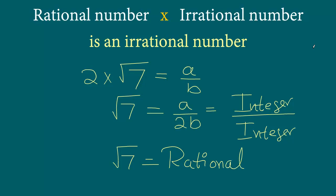Now we know for a fact that square root 7 is not a rational number. In a question such as this, our goal is not to prove how square root 7 is irrational — if that were the question we would use the method we used to prove square root 2 is irrational. We can simply assume square root 7 is irrational. So what we are seeing is square root 7 equals a rational number, which we know is not correct. That means our original assumption — that 2 times square root 7 is a rational number — is wrong. So 2 times square root 7 is an irrational number.